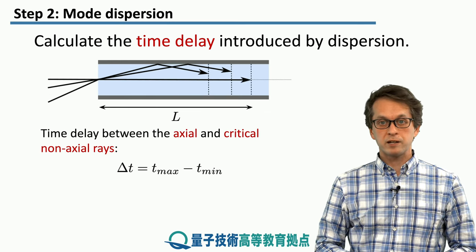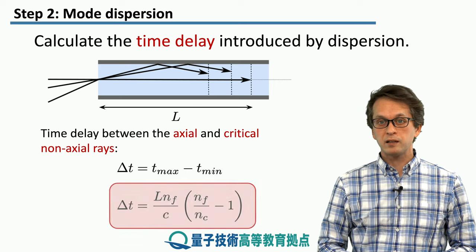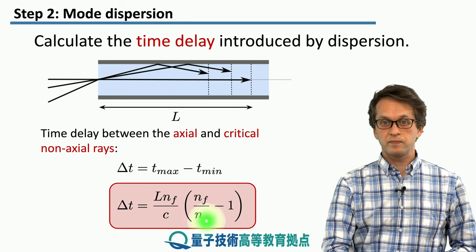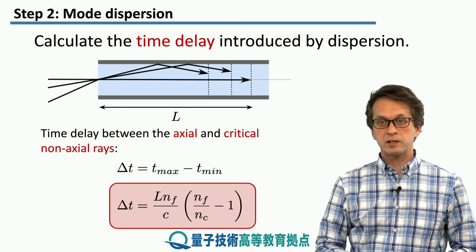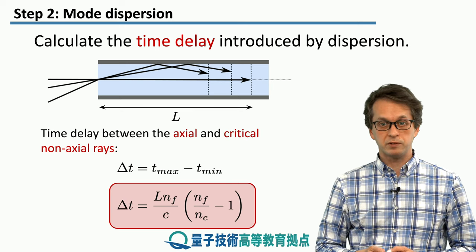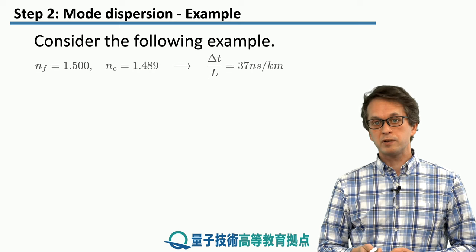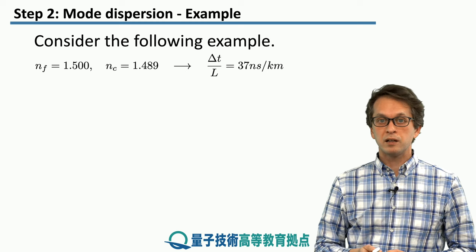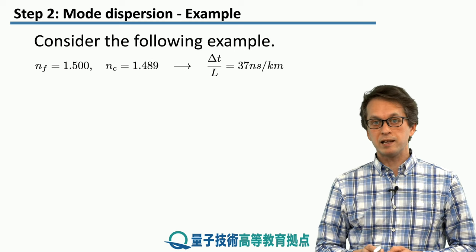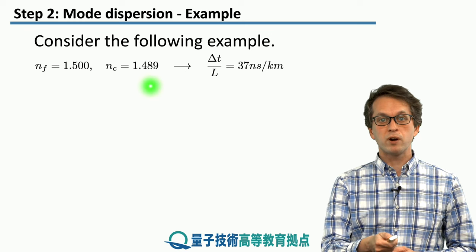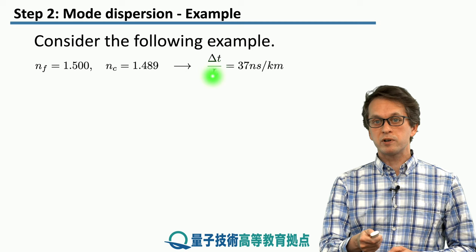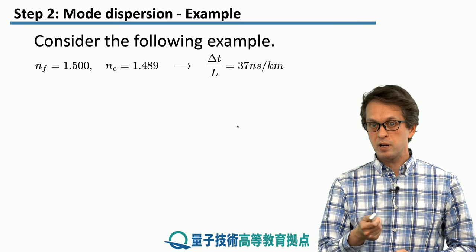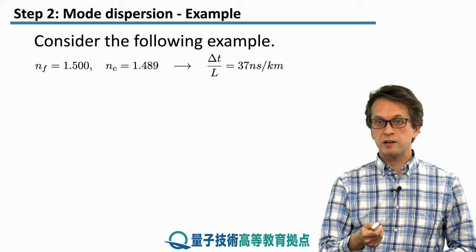It's very easy to combine the expressions for T-max and T-min to obtain the time delay. Plugging in numbers — refractive index of the fiber equal to 1.5 and refractive index of the cladding equal to 1.489 — we obtain a time delay per one kilometer of 37 nanoseconds per kilometer.